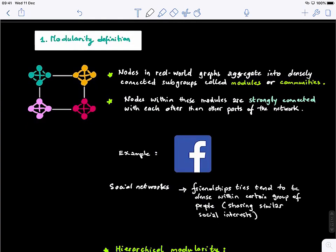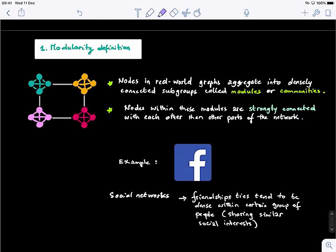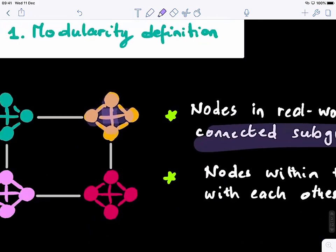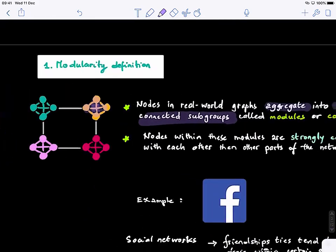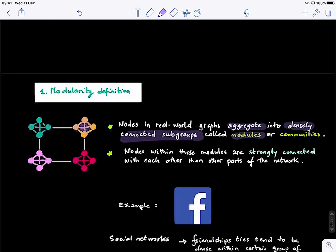So first, let's define modularity. What is modularity? Generally, nodes in real-world graphs aggregate into densely connected subgroups. These densely connected subgroups, like these ones, we call them modules, or we can also call them communities.